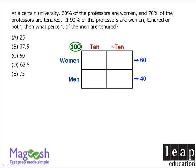We're also told that 70% of our professors are tenured. So 70% of 100 is 70, which means we have 70 tenured professors, and the other 30 professors are untenured.